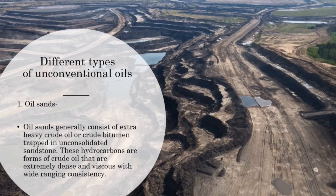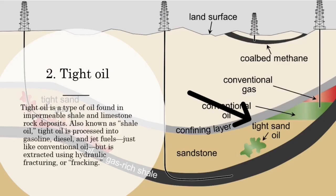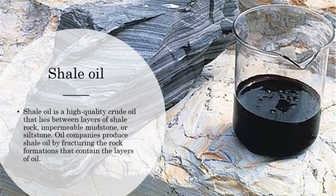These are the different types of unconventional oils. Oil sands — in simpler words, it is just extracting the oiliness of the sand, so you can imagine how difficult it is. Tight oil is similar to conventional oil but is located further away and present in much smaller quantities. Shale oil is extracted directly from the shale stone.